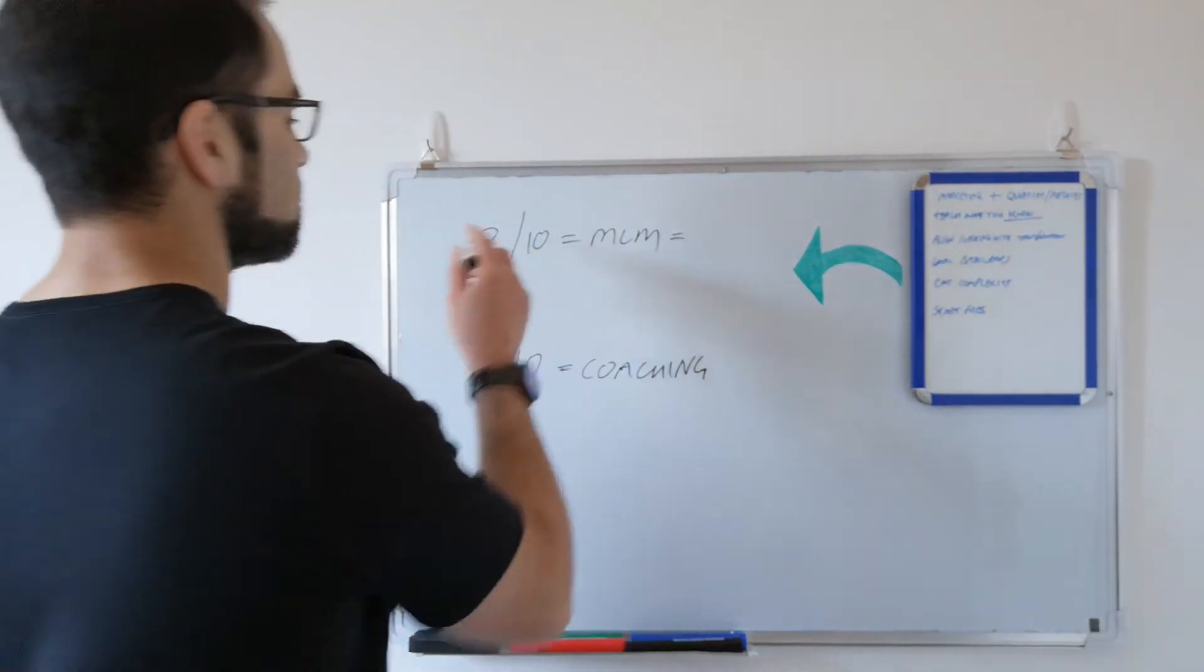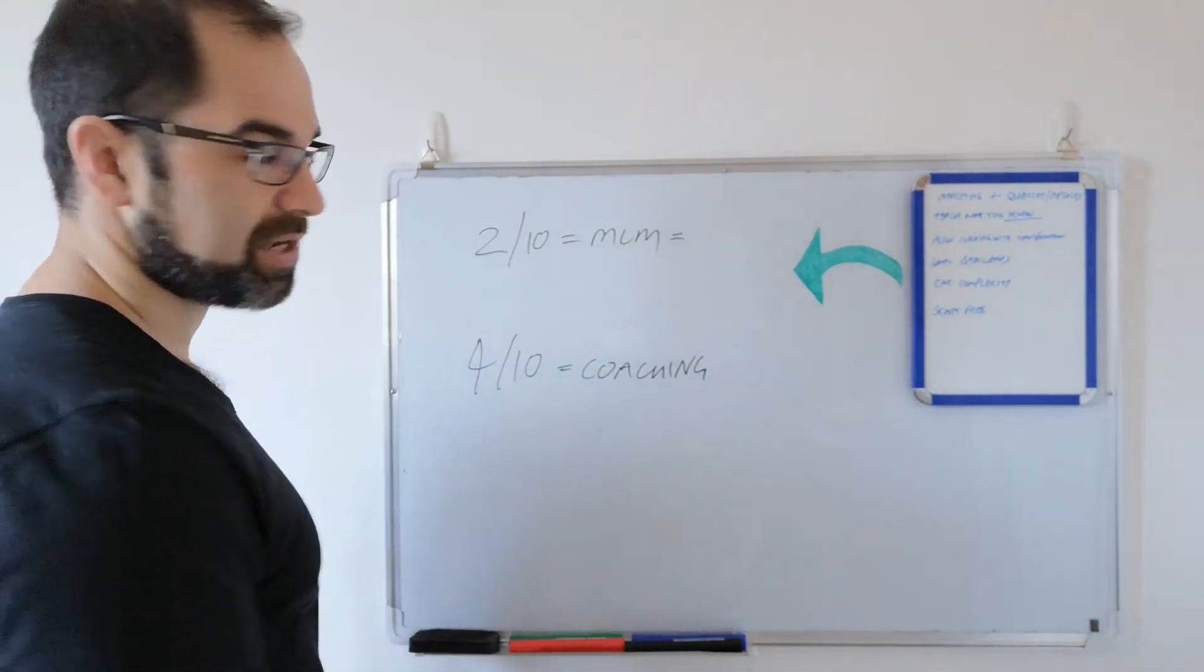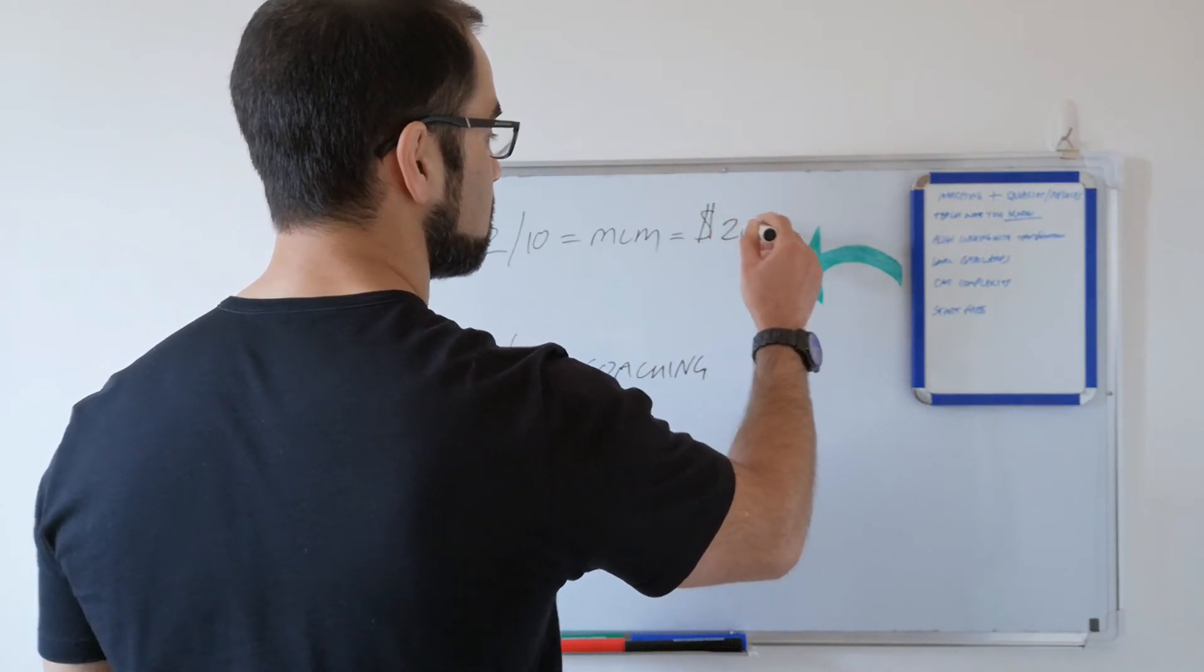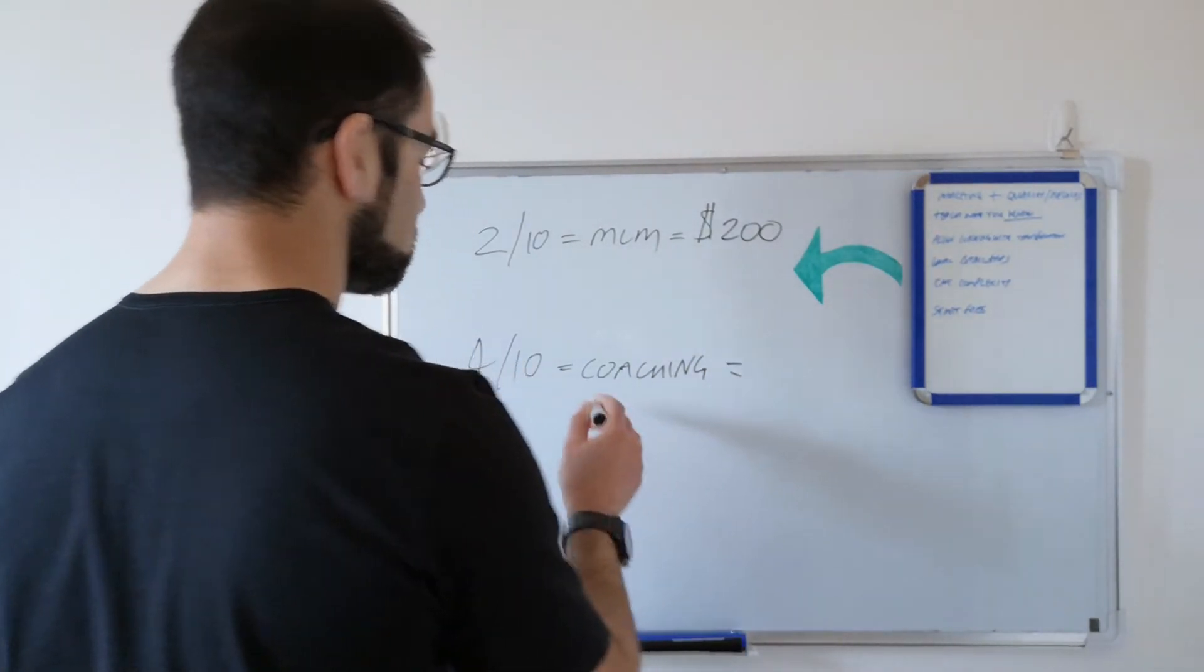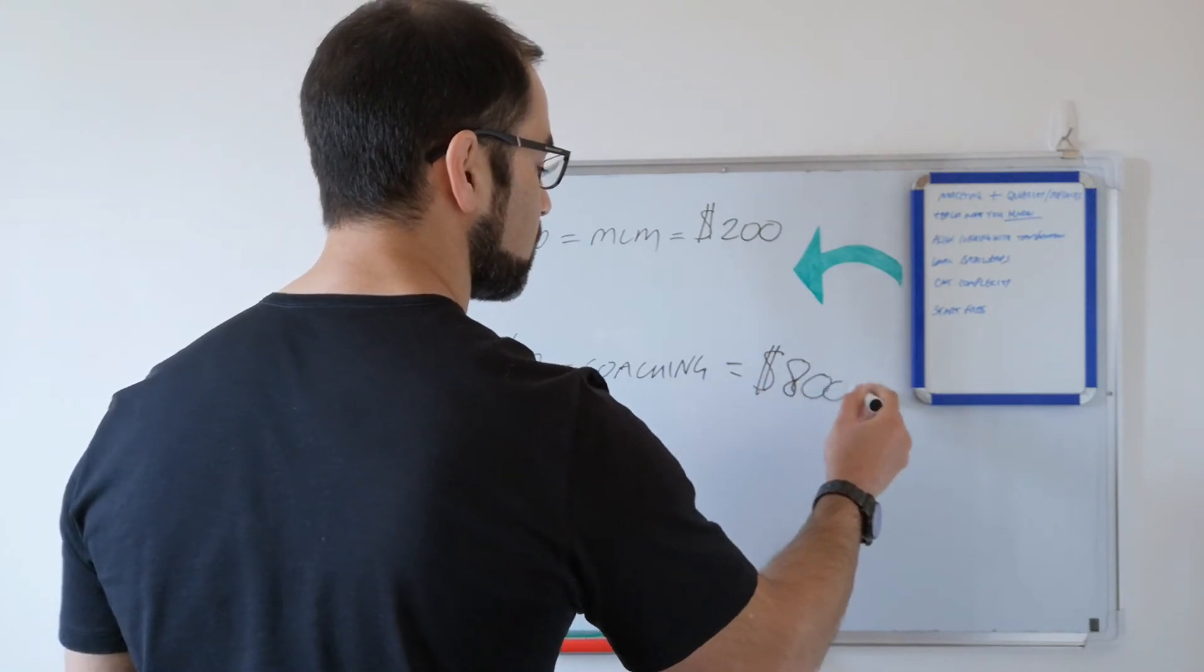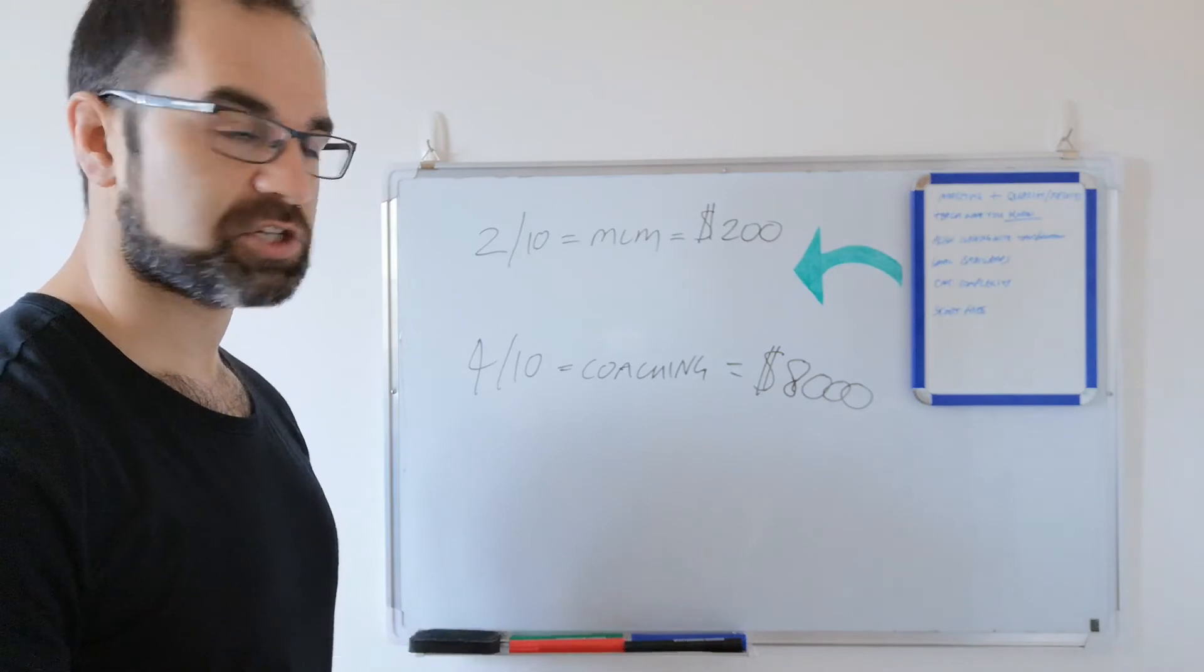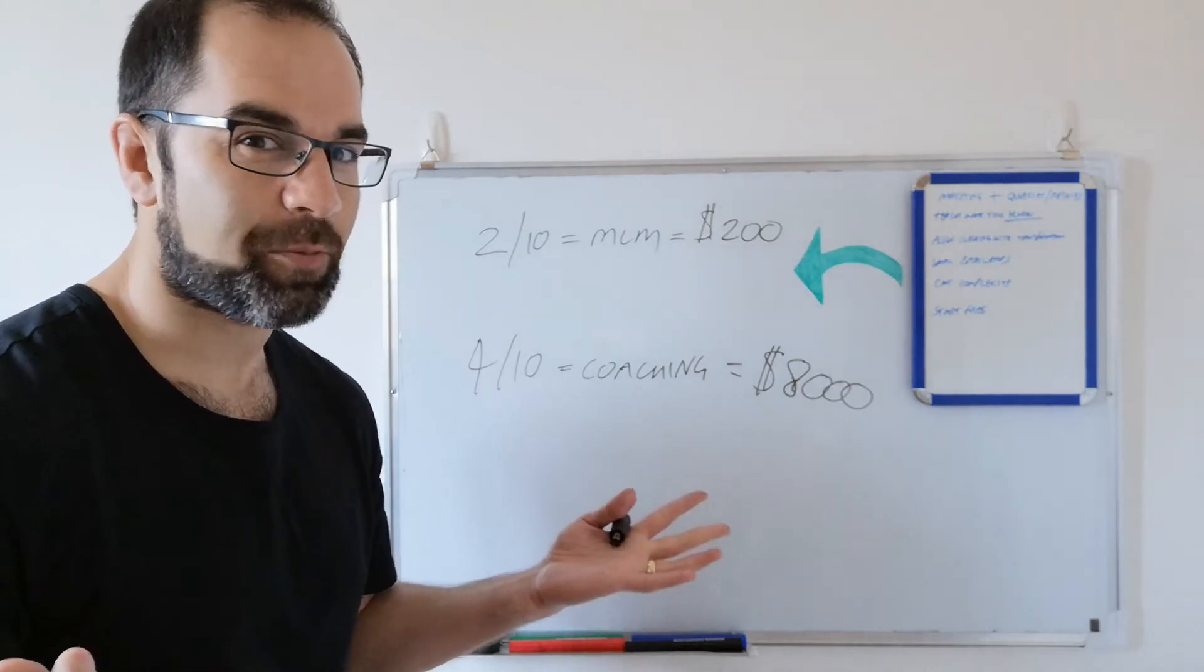Now, how much are you going to make per sale in MLM? On a good day, maybe $50 a sale. Even let's say $100 a sale, which I don't know any network marketing company that pays $100 up front to sale as well as decent residual. So what have we got? We've got $200 per 10 conversations. For the same type of conversation, what have we got? It was $2,000 a package. We've got $8,000. What do you want to make in the next 7 to 30 days for the same amount of effort and the same amount of conversations and the same amount of marketing? $200 or $8,000?